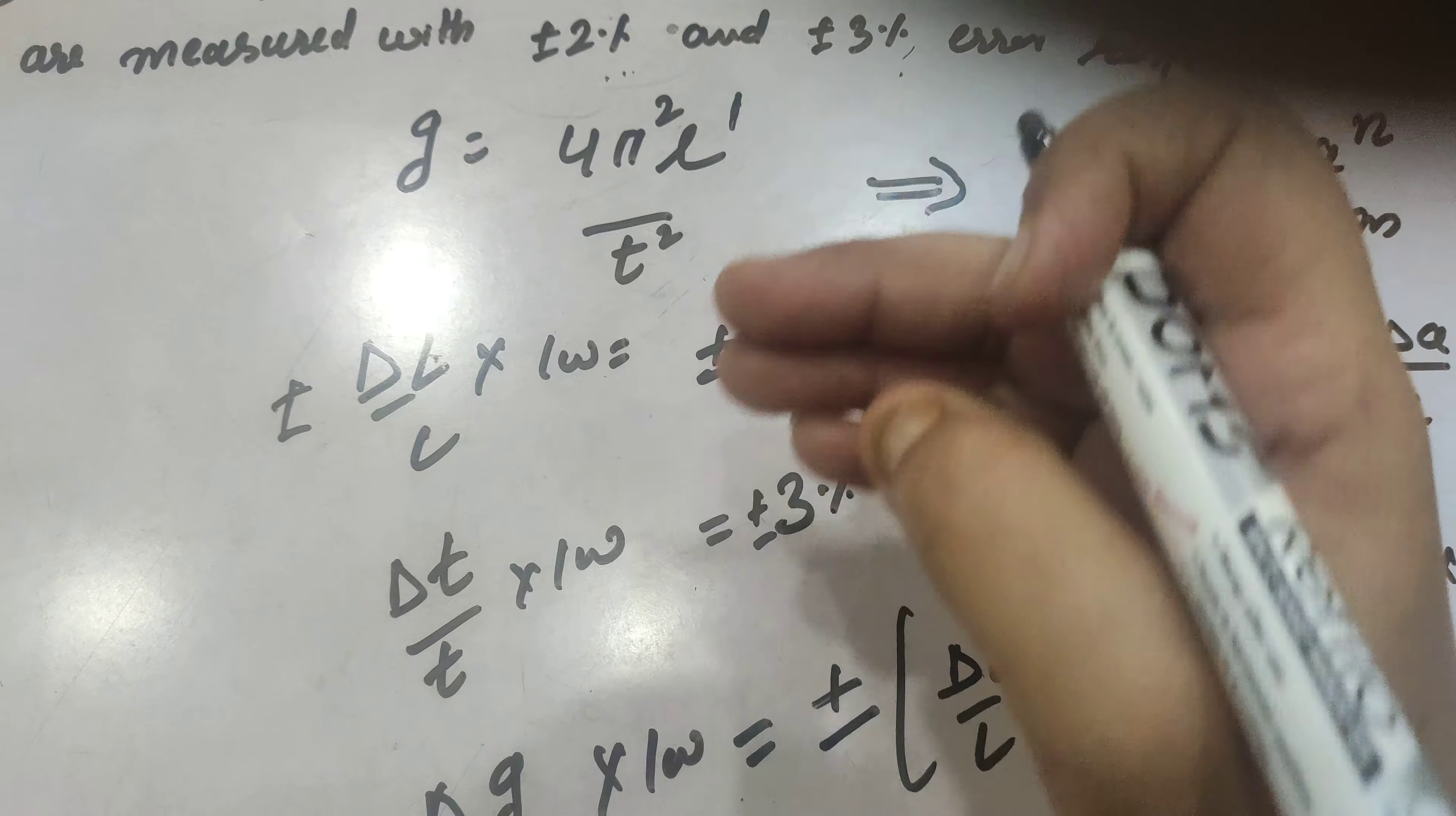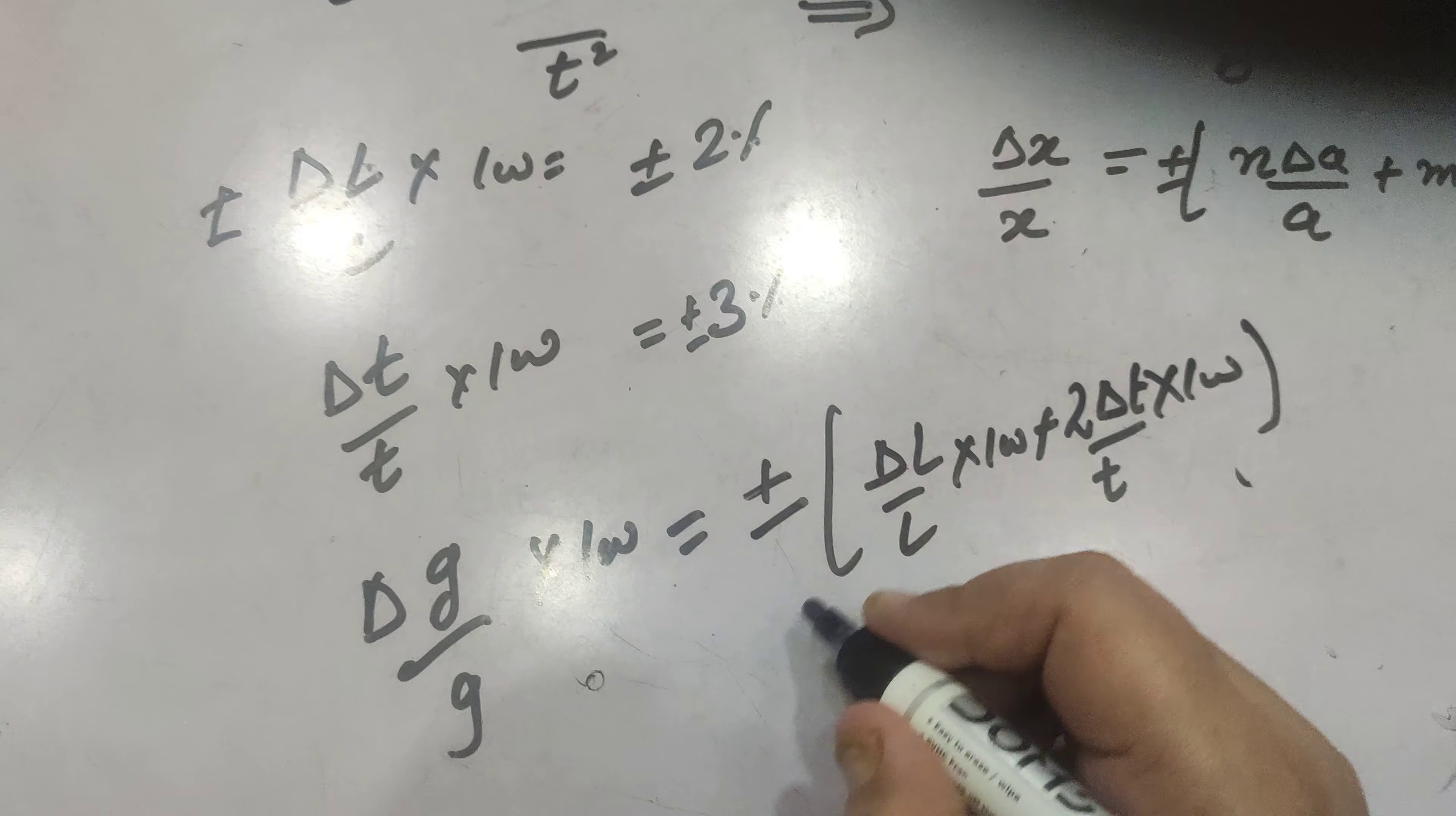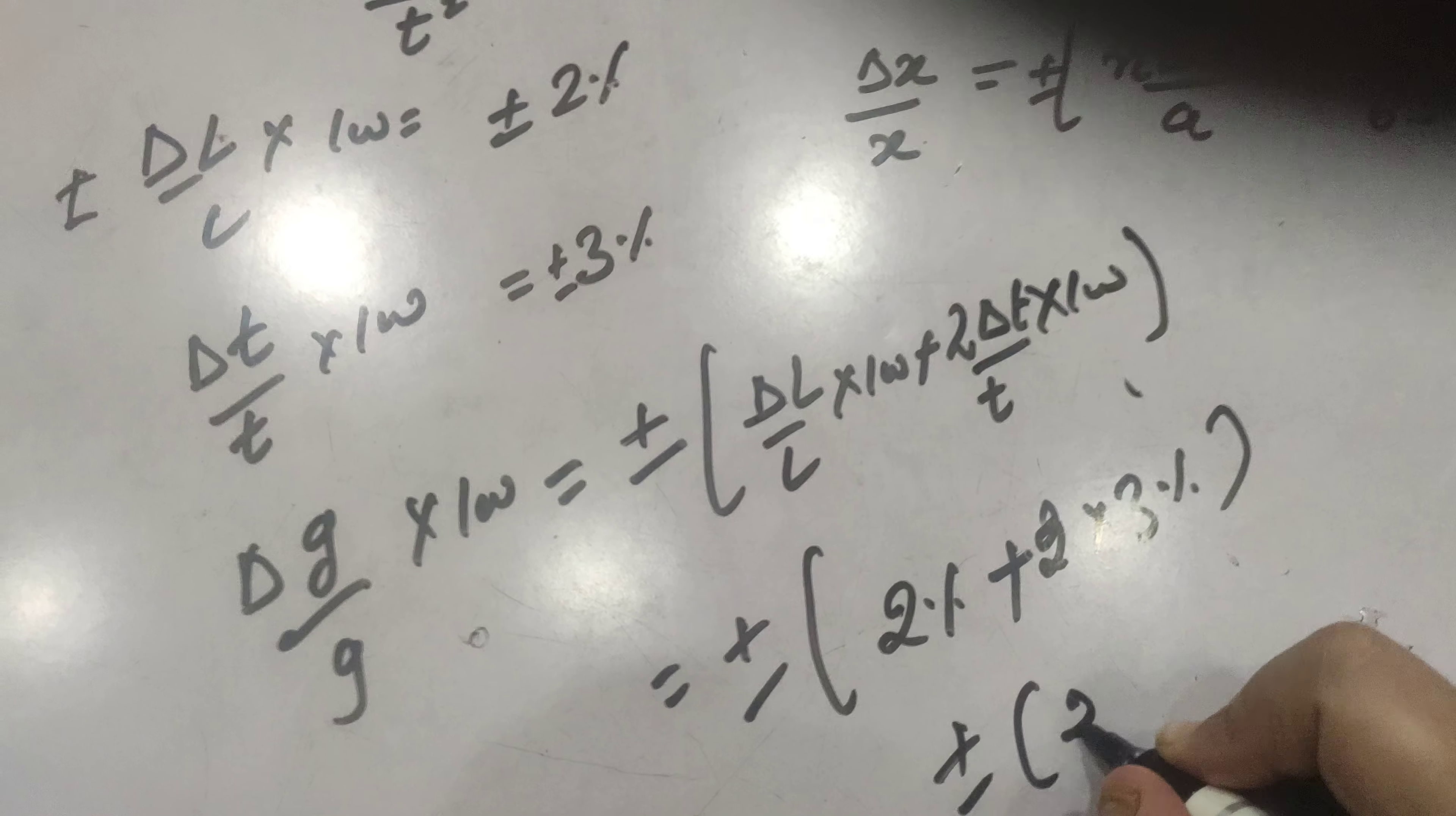We are not taking, whatever is the power in the denominator that is taken to be positive. So 2 into delta T by T into 100. Right, 100 will cancel out if we write it simply. So in this case putting the values plus minus delta L by L is 2 percent, 2 percent plus delta T by T is 2 into 3 percent. So calculating this becomes plus minus 2 plus.